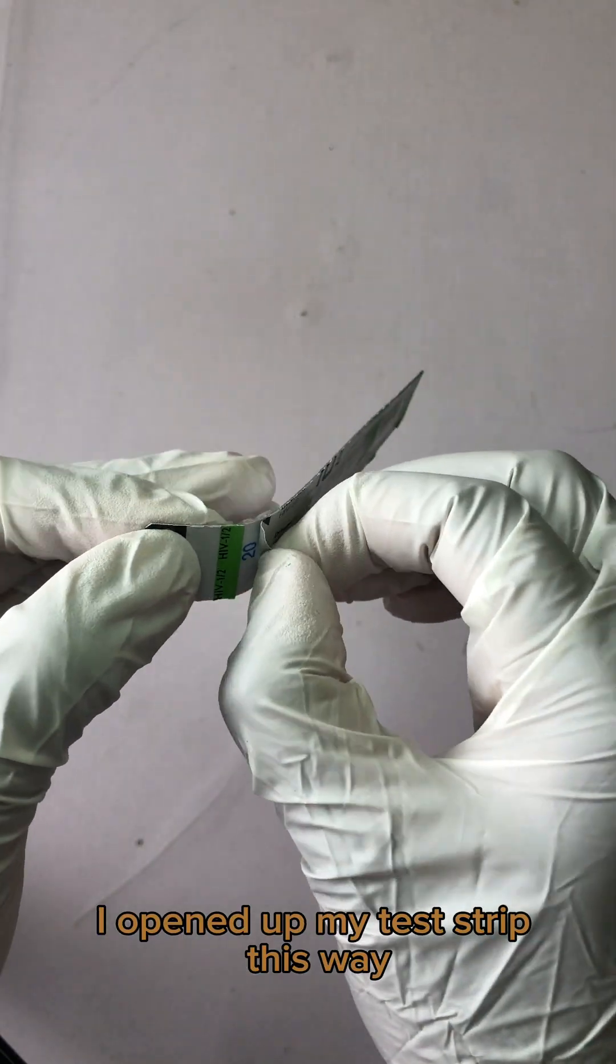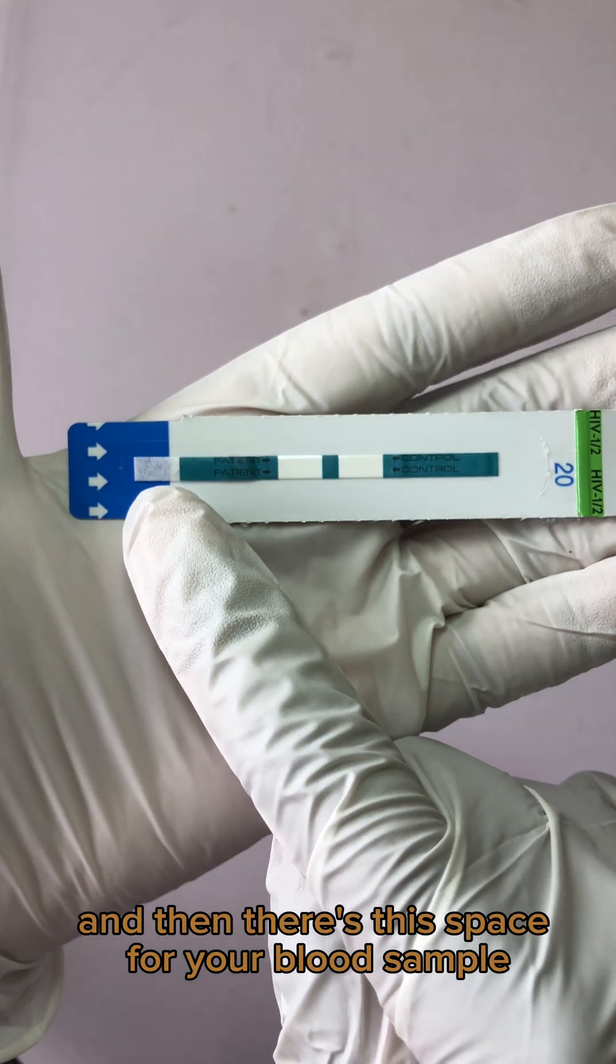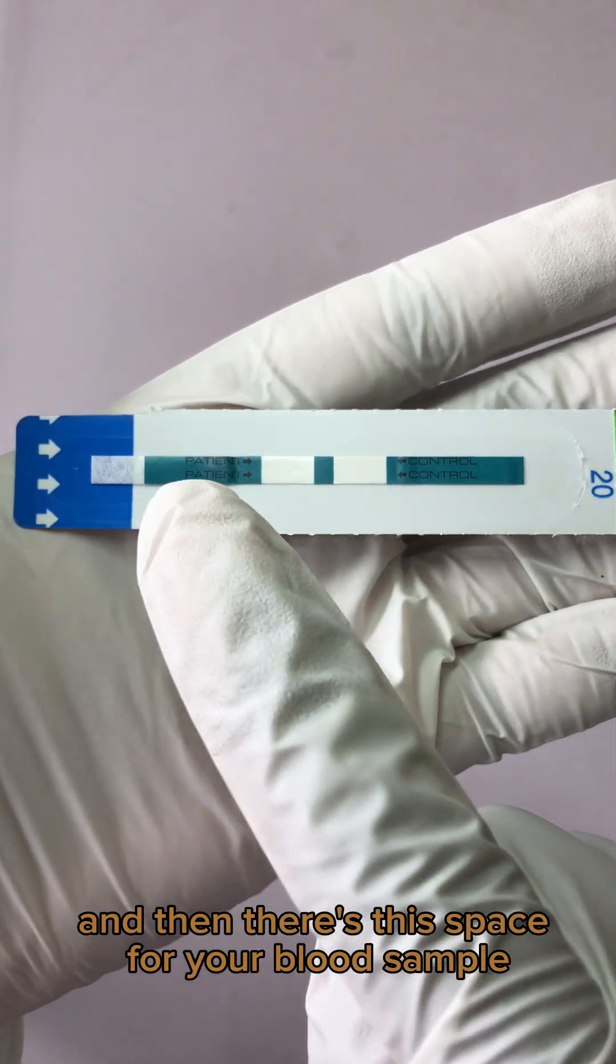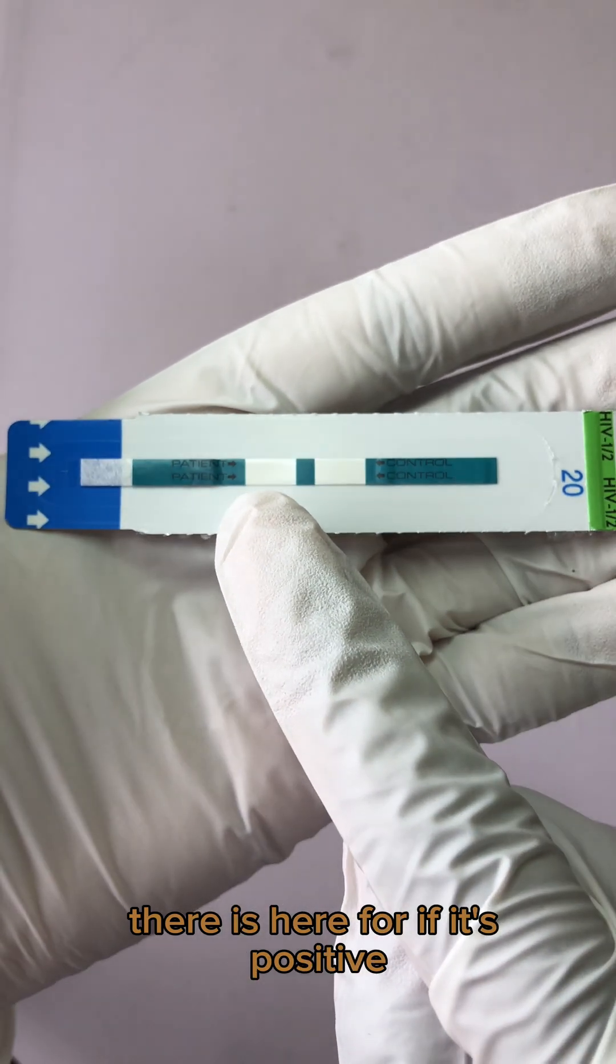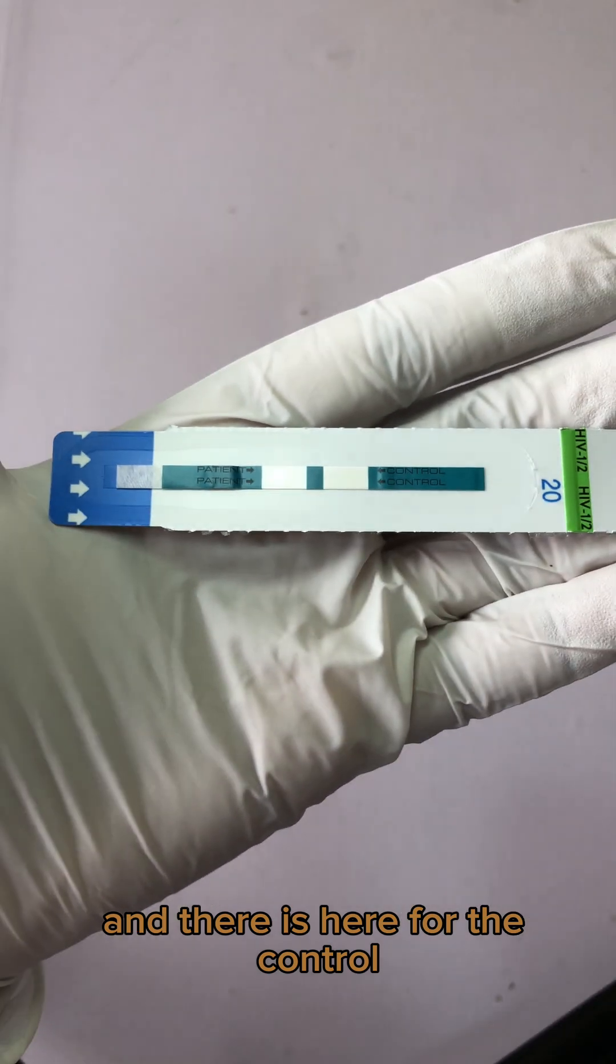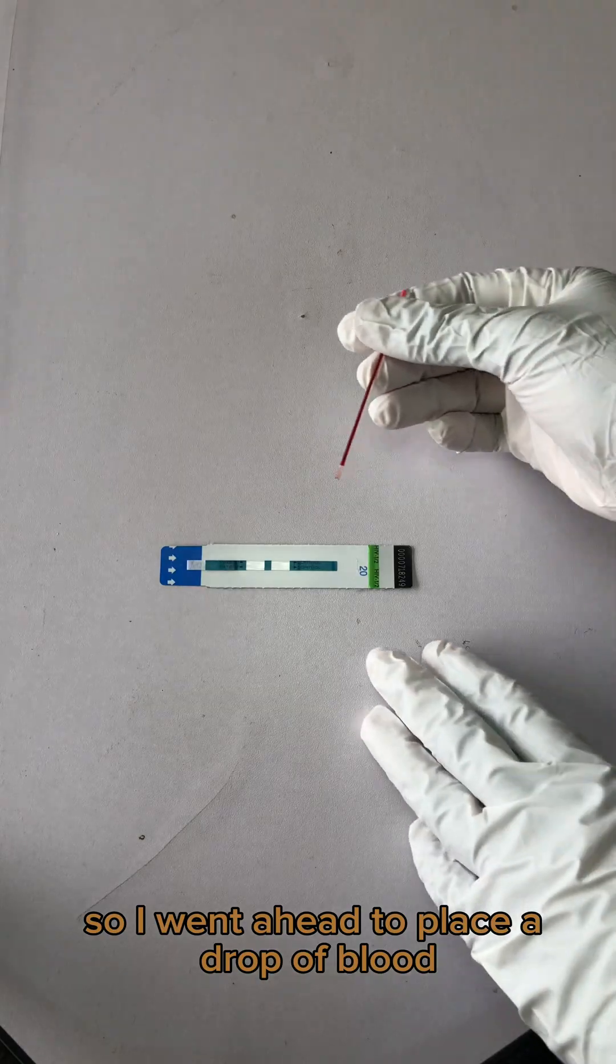I open my test strip this way. There is this space for your blood sample, there is here for if it's positive, and there is here for the control. So I went ahead to place a drop of blood in the space created for the blood sample.